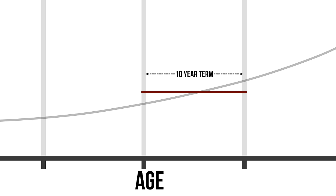This fixed cost during the term would be a bit higher than the one-year cost earlier on in that term, but a bit lower than the one-year cost later on in that 10-year term — essentially, they're averaging it out.